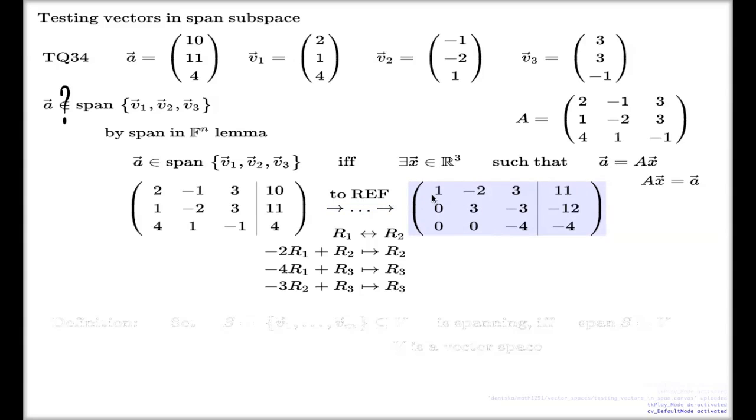Judging by the row echelon form, we have three pivots on the left hand side. If you remember the criterion for solvability of a system of linear equations, having three pivots on the left hand side in a three-dimensional augmented matrix means that we have a solution—a unique solution.